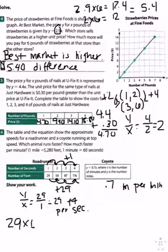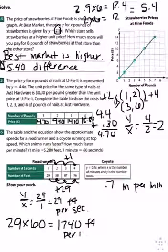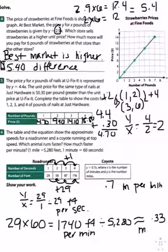That gives me 1,740 feet per minute. I'm then going to divide that by 5,280 because that's how many feet are in a mile. So 1,740 divided by 5,280 is going to be, it's a big long decimal. It's going to be about 0.33 miles per minute.